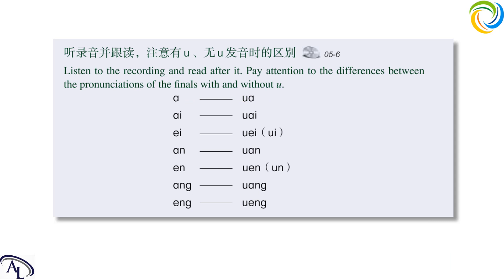听录音并跟读，注意有 u、无 u 发音时的区别。Listen to the recording and read after it. Pay attention to the differences between the pronunciations of the finals with and without u. 柜，舵，环，淋，岸，管，雇，温。